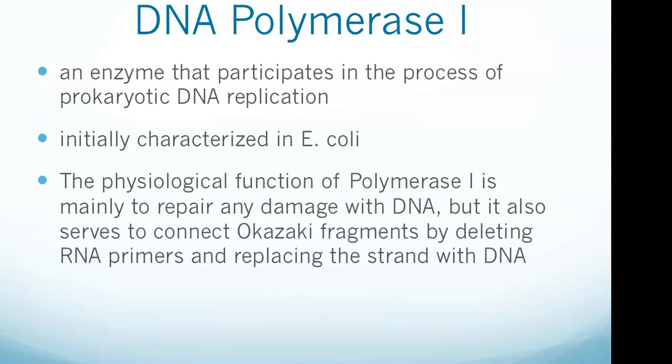DNA polymerase 1 is an enzyme that participates in the process of prokaryotic DNA replication. Discovered by Arthur Kornberg in 1956, it was the first known DNA polymerase and the first known of any kind of polymerase. It was initially characterized in E. coli and is ubiquitous in prokaryotes. In E. coli and many other bacteria, the gene that encodes polymerase 1 is known as Pol-A.